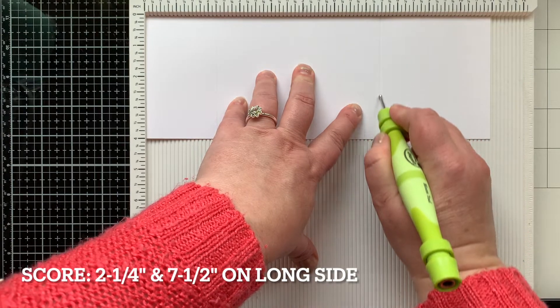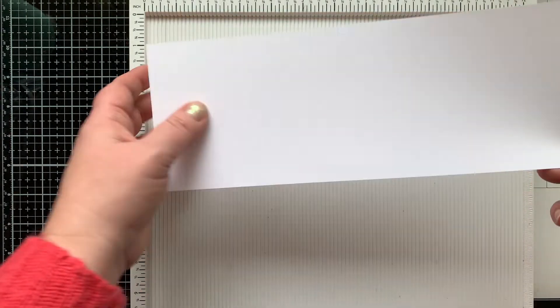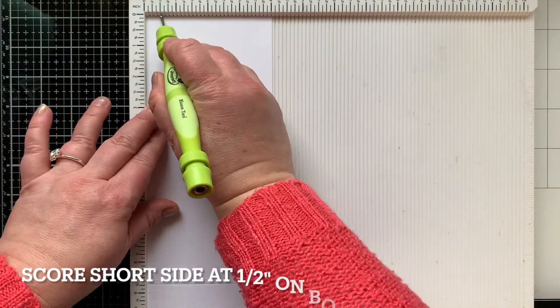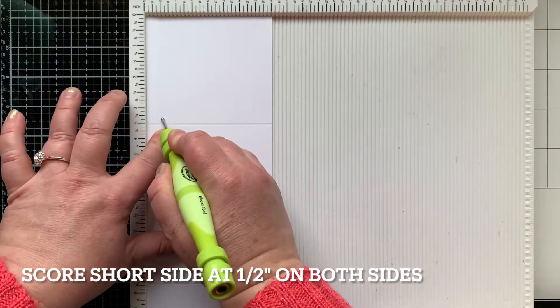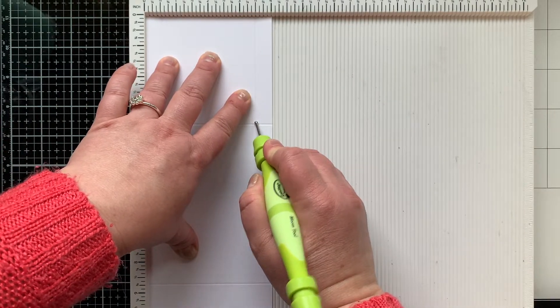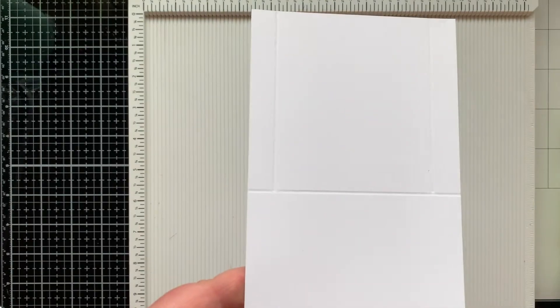I'm going to then rotate this and score it on the short side. With that larger scored flap at the top, I'm going to score it at a half and a half an inch on both sides, stopping at the intersecting score line. But you could score all the way down and then trim away the excess with your scissors.